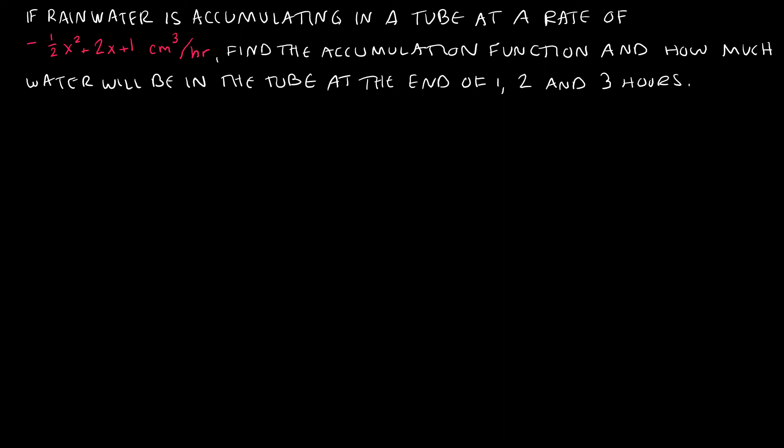For this question, we're going to change things up just a little bit. We're saying that the rainwater is accumulating in a tube at a rate of negative 1 half X squared plus 2X plus 1 cubic centimeters per hour. And I want to find the accumulation function and how much water is in the tube at the end of 1, 2, and 3 hours.